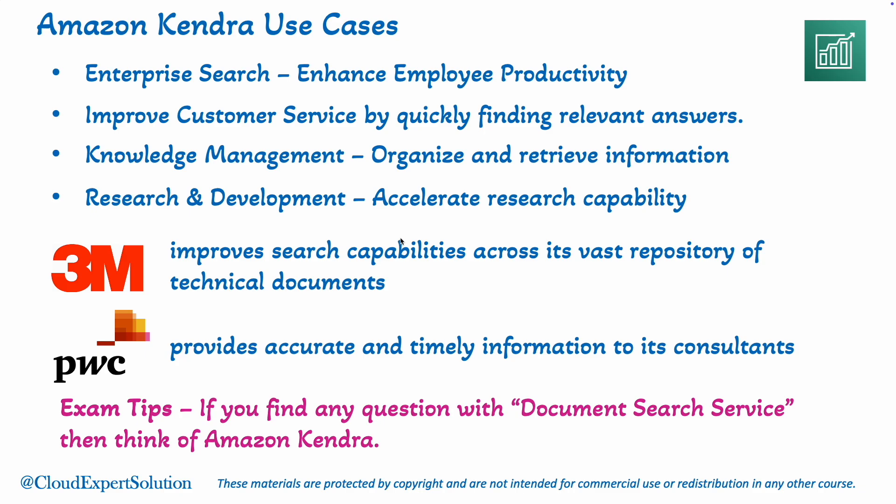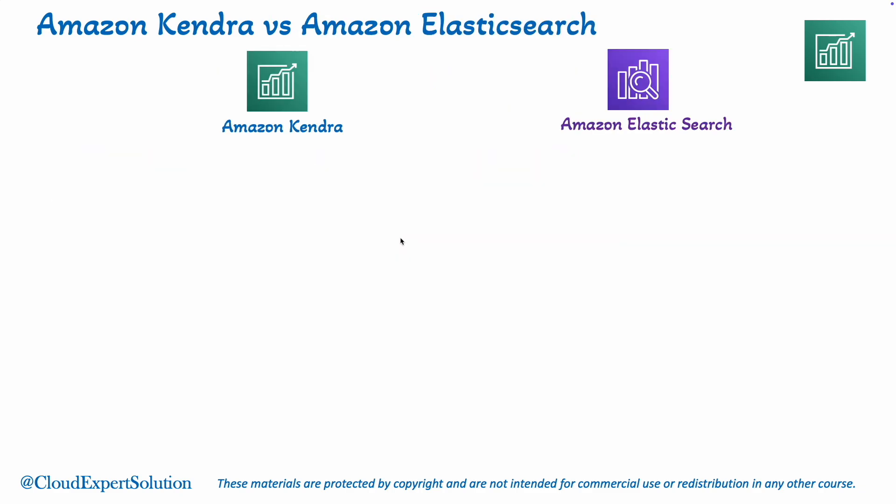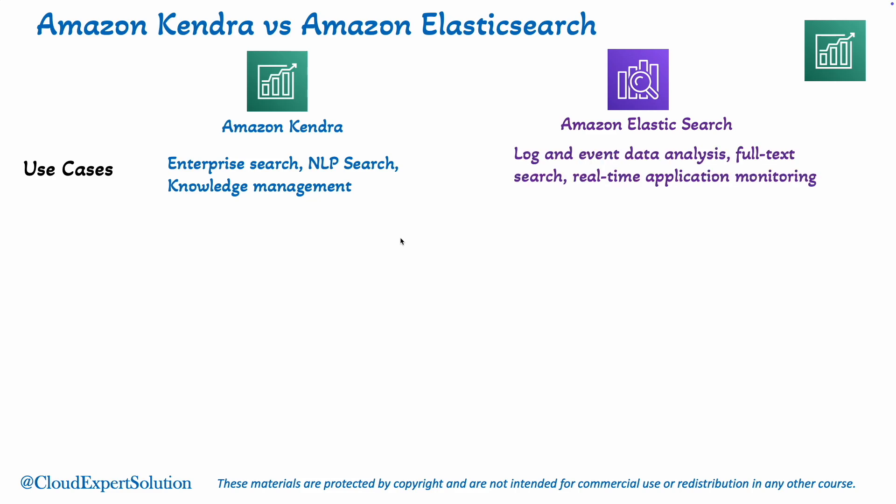You may have some confusion between Amazon Kendra and Amazon Elastic Search. Let me clarify that. You should know the use cases where you should select Amazon Kendra versus when to opt for Elastic Search. Amazon Kendra can be used for enterprise search, customer support, knowledge management, NLP search, and research and development. On the other hand, Amazon Elastic Search is mainly used for log and event data analysis, full text search, or real-time application monitoring.